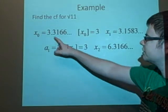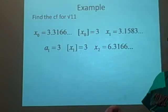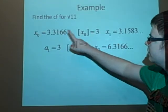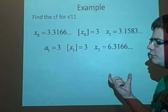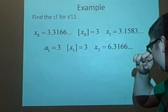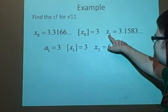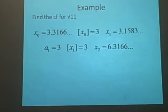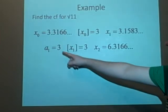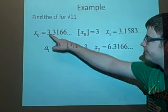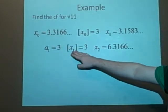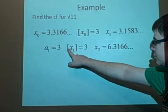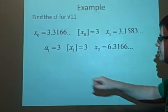We want the integer part of this, which is 3, and then we want to do the 1 over this minus this. So you're just doing 1 over the decimal part of the number each time. And this gives us the value for x1, which is 3.1583. So that's our x1. And of course, a1 is equal to the integer part of the x1, so our a1 is 3. a0 is going to be 3. And the integer part here is equal to this, which is 3.